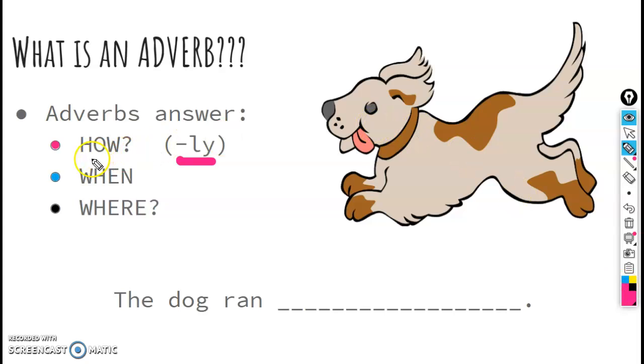So the first kind of adverb again is how. So we want to describe how the dog is doing its action. Our verb, if you notice, is ran. That's what the dog is doing. That's his action word. So our first kind of adverb, how, we want to think of a word that tells us how is the dog running. Well, then maybe the dog, if we look at him, looks like he might be running fast. So fast is an adverb that tells us how the dog is doing something.